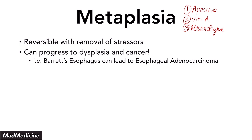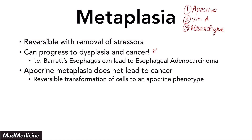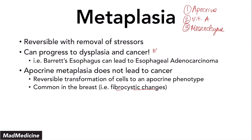Apocrine metaplasia will not lead to cancer — it is a reversible transformation of cells to an apocrine phenotype. One common thing to remember is that this is a very common occurrence in the breast, known as fibrocystic changes. Fibrocystic changes occur in many females, and if it were dangerous, we would see an increase in breast cancer rates — but we don't see that relationship. So apocrine metaplasia is a type that is not really going to lead to cancer. Commit this concept to memory.